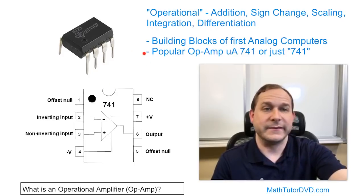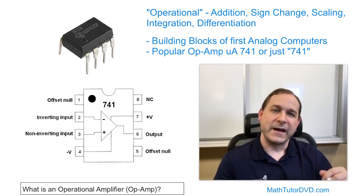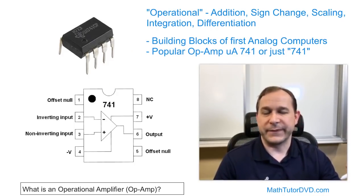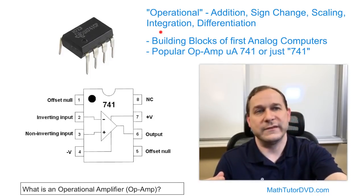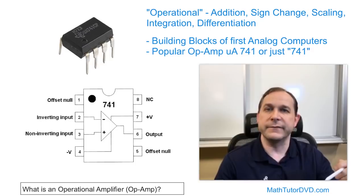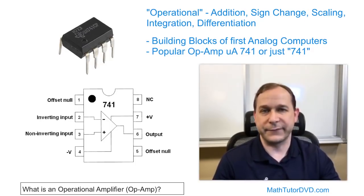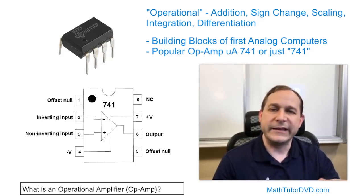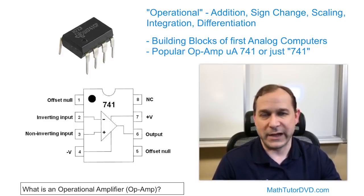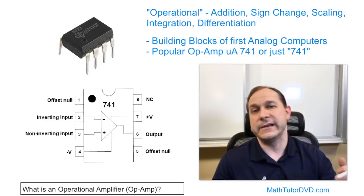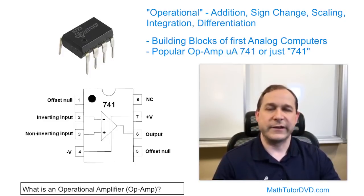And you can also do more advanced mathematical things with them, like you can actually build an op amp circuit to take the integral, the actual calculus integration of a function of time, also differentiation. So that's why the history of it is called an operational amplifier, because you can do addition and scaling and integration and things like this.